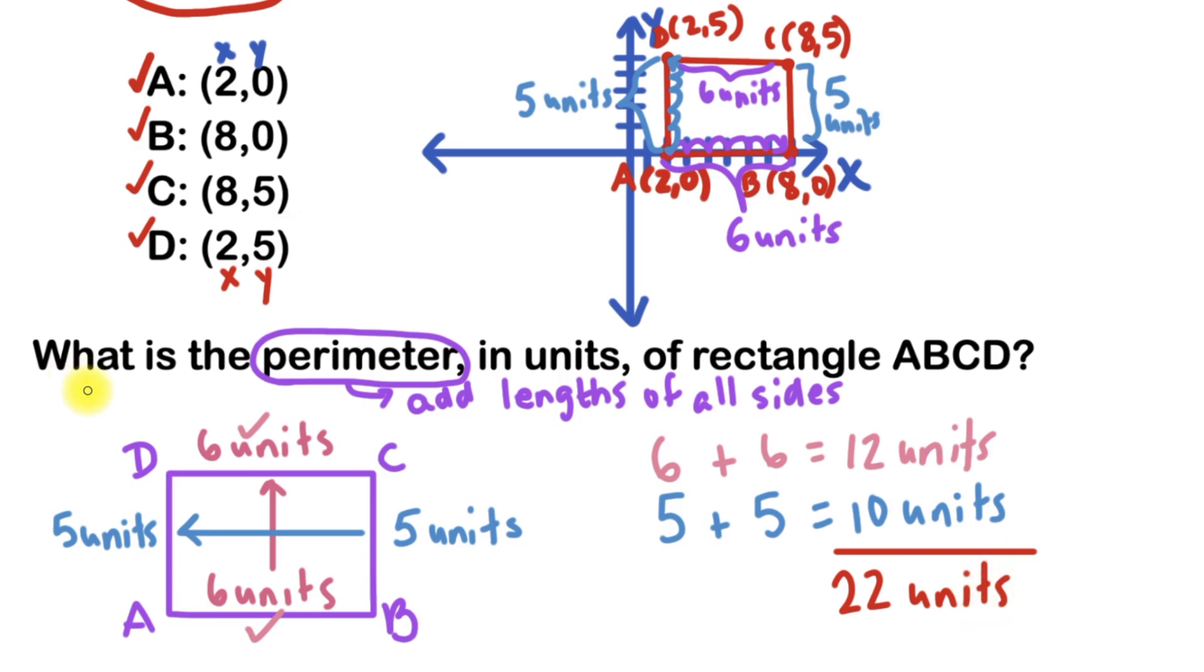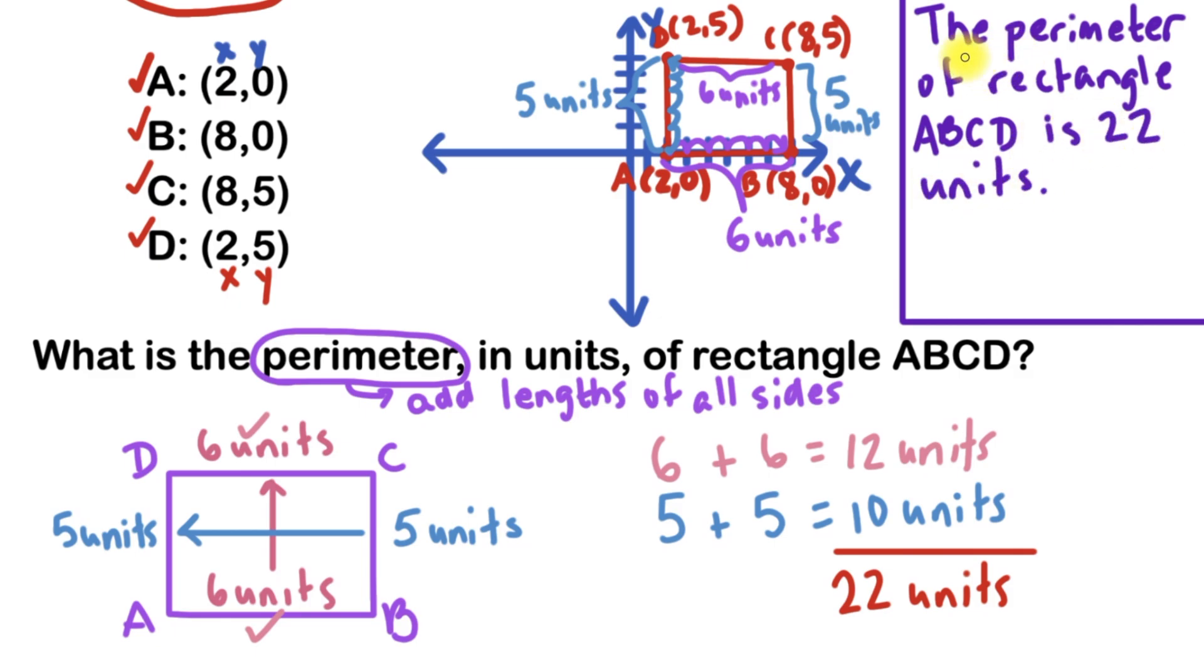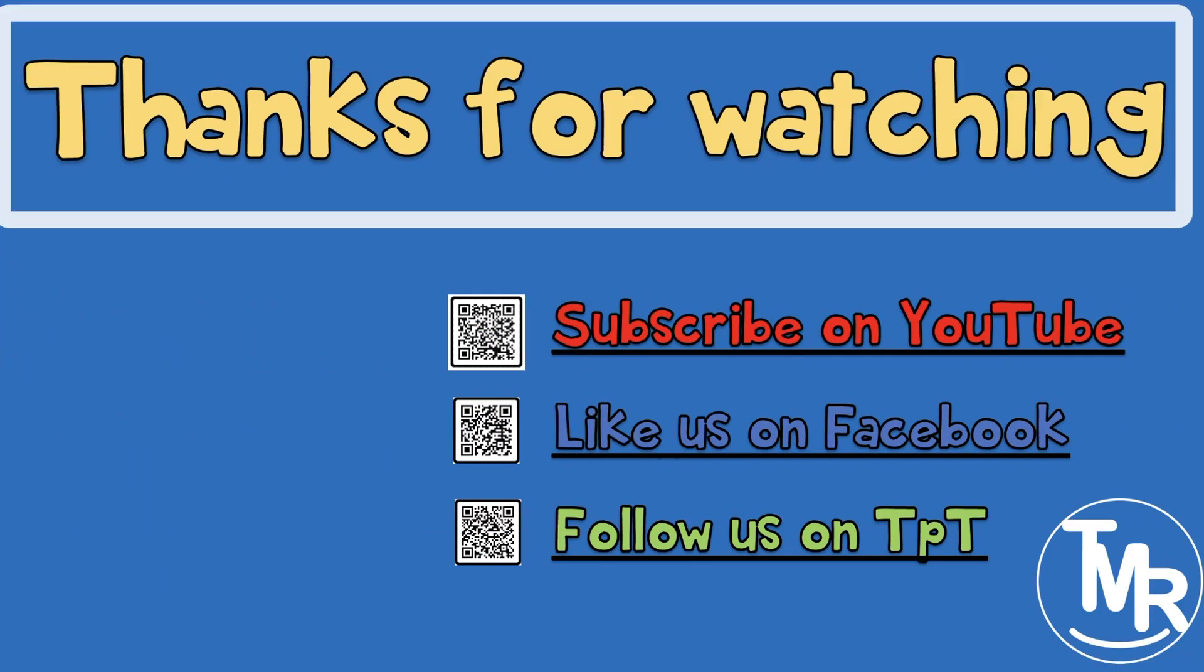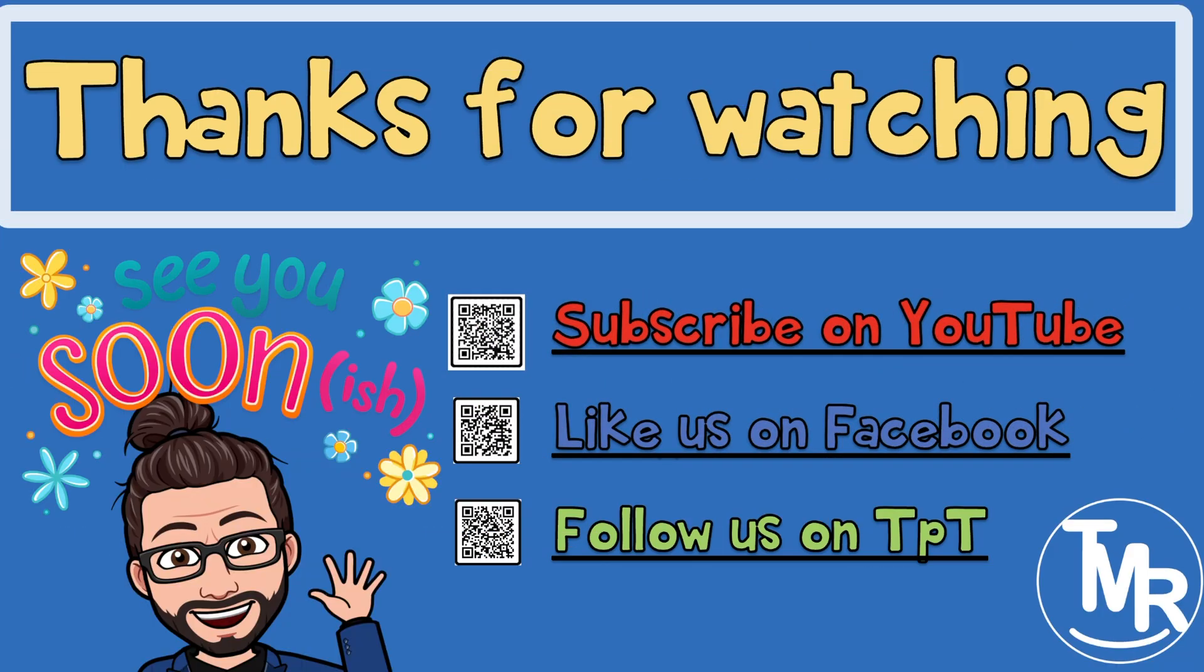So to answer our question in a complete sentence, we would say this: The perimeter of rectangle ABCD is 22 units. Thanks for watching, and we'll see you next time on the math review.